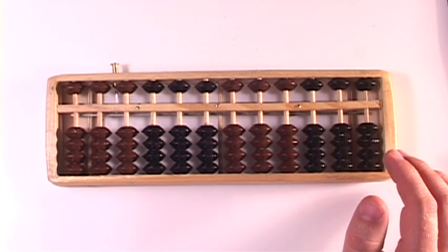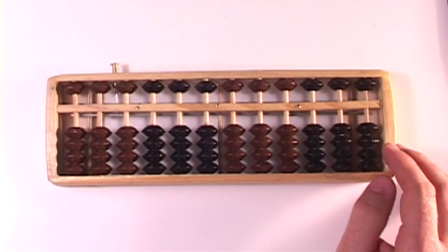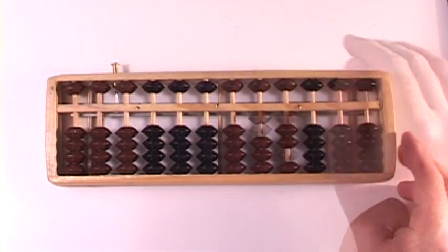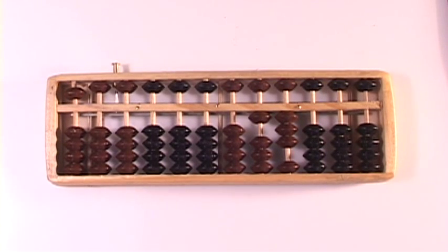Let us do 13 minus 6. So set the number 13 on your abacus. So 13 minus 6. So think back to what we did using the compound complementary numbers in addition in the ones column. And I'm going to do just the opposite of that.